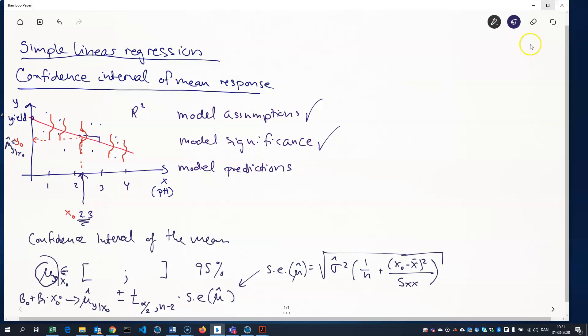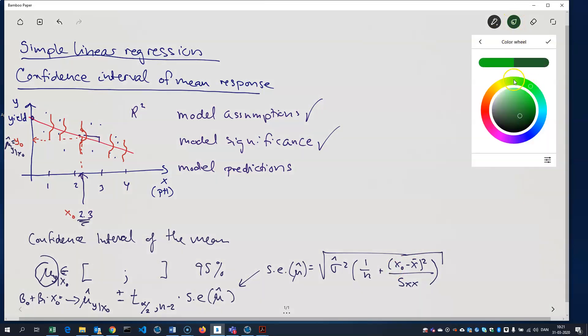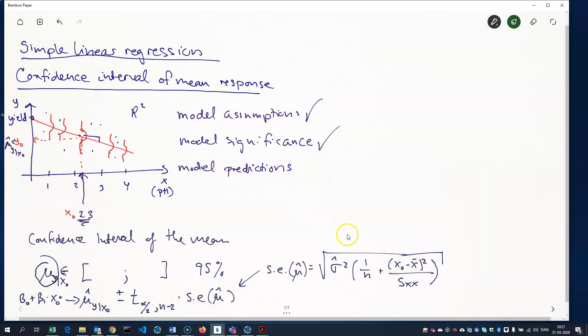I said before that the confidence interval, it depends on what value of x that I choose. So, and you can see that from the formula here because the standard error depends on x naught. So, what that means is, that means that when I'm close to x bar here, the mean of the x values. So, that would be somewhere in the middle here. When I'm close to the center of my x values, then I have a small confidence interval.